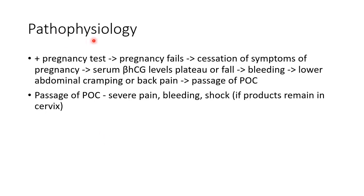Now let us see about the pathophysiology of miscarriage or abortion. Whenever there is a positive pregnancy test and if pregnancy fails, there will be cessation of symptoms of pregnancy. The serum beta-HCG levels plateau or fall. This will cause bleeding and lower abdominal cramping or back pain, and eventually there will be passage of products of conception. During passage of products of conception, there will be severe pain, bleeding and features of shock if the products remain in the cervix.